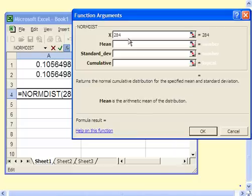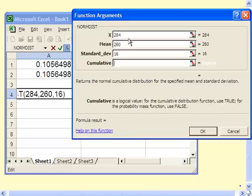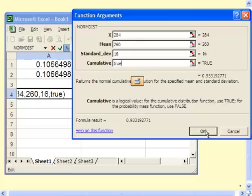And again, we have a mean of 260, a standard deviation of 16, and we always put down true. We always want the cumulative, so we say okay.